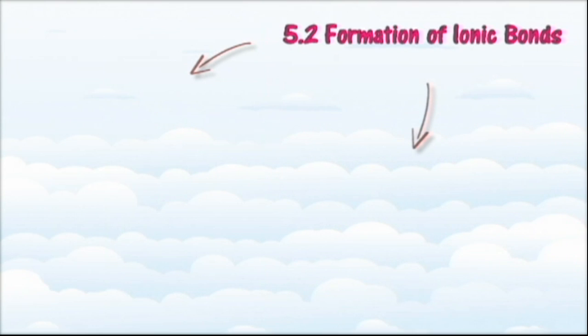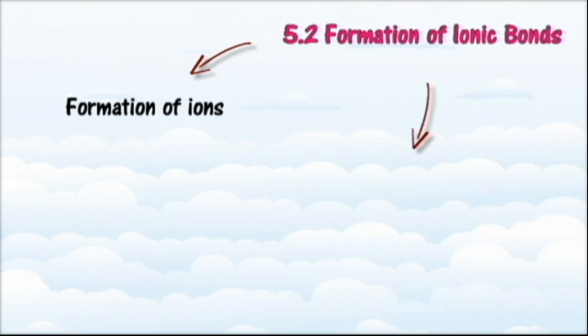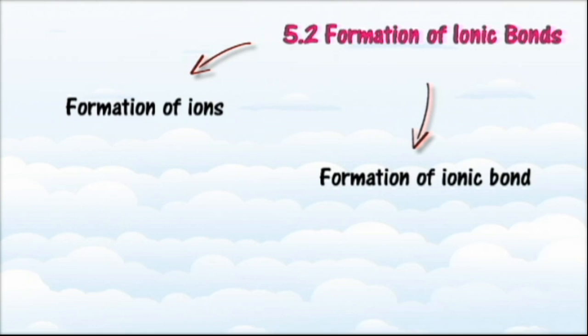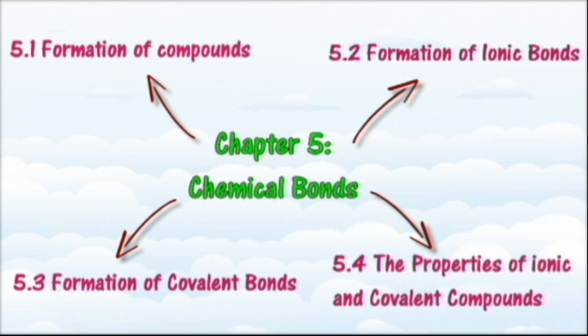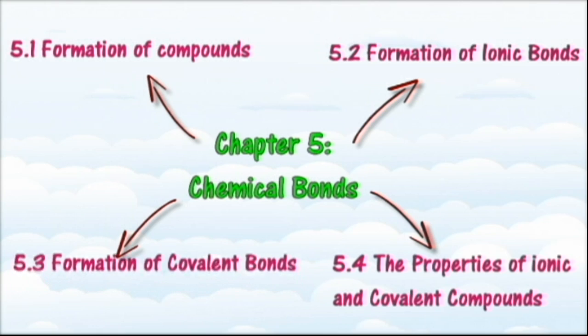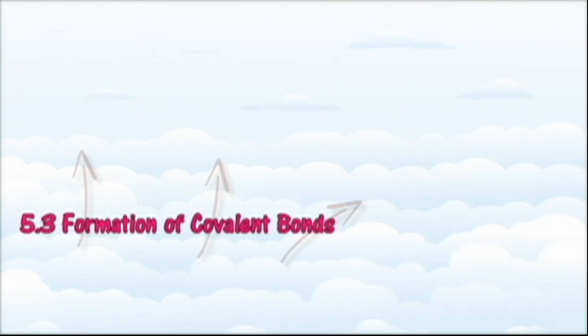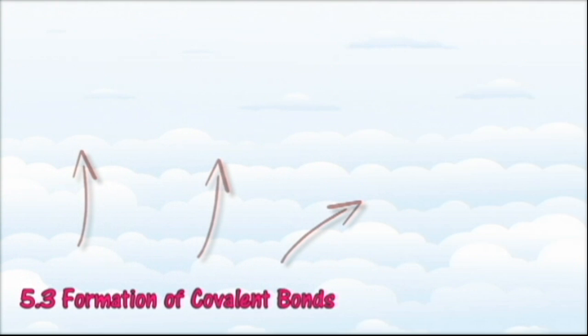In section 5.2 we will learn about the formation of ionic bonds. At the end of this section you should be able to explain the formation of ions and write electron arrangements for the ions formed, explain the formation of ionic bonds, illustrate the electron arrangement of an ionic bond, and illustrate the formation of an ionic bond.